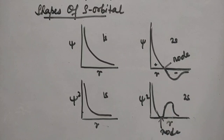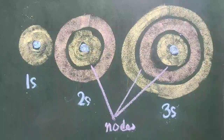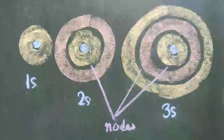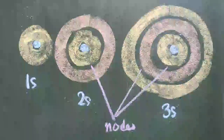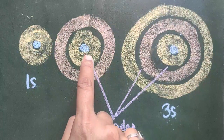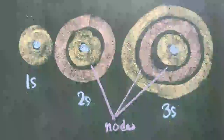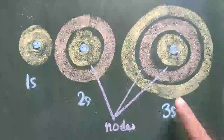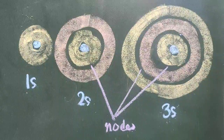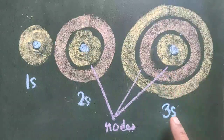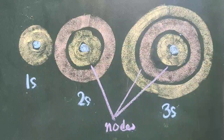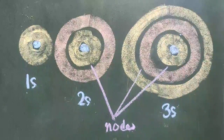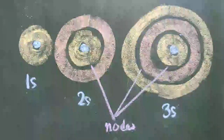The probability density variation can also be visualized using electron cloud diagrams. For the 1s orbital there is no node. The 2s orbital shows a gap between two electron charge cloud regions — that gap is the node — so 2s contains one node. Similarly, in 3s there are two gaps between three cloud regions, so 3s has two nodes. Now we can explain the shape of the s orbital.